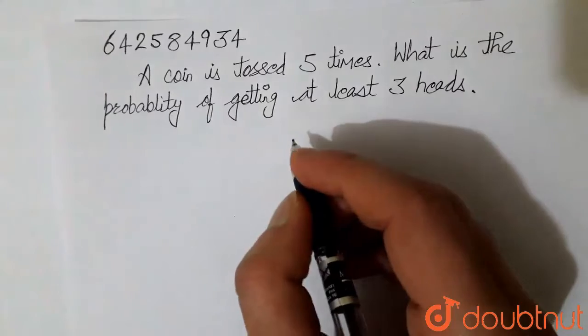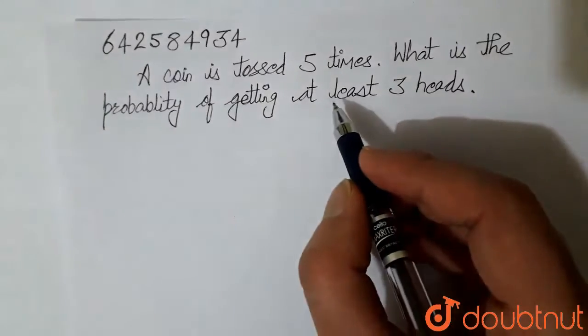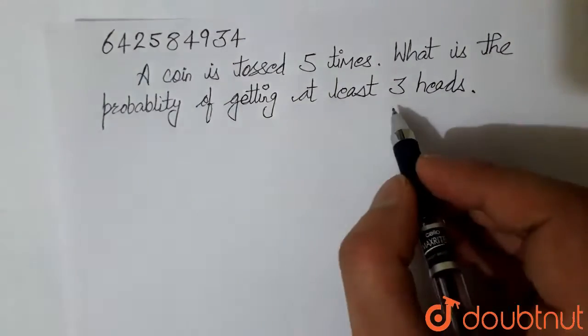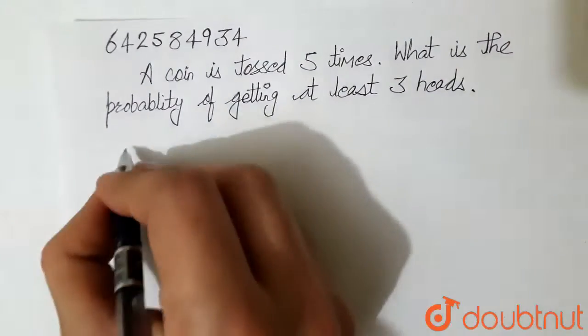Hello students, so the question is: a coin is tossed 5 times, what is the probability of getting at least 3 heads? Let's look at the solution.